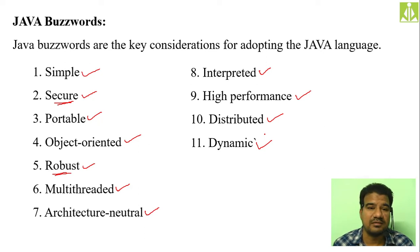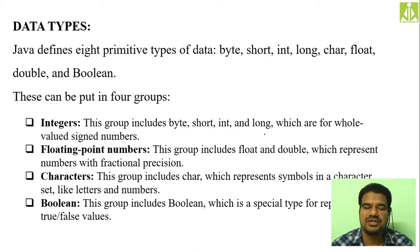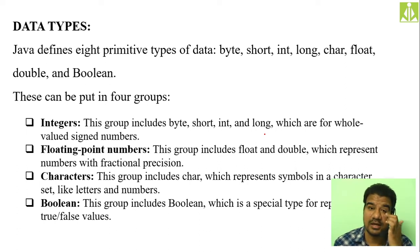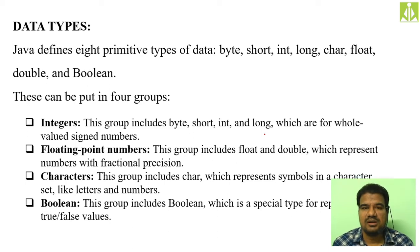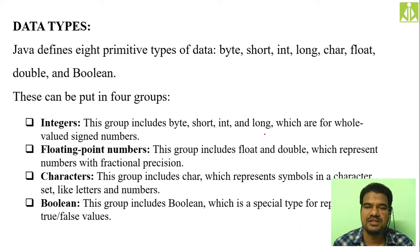Hopefully you understood all these buzzwords — they are important buzzwords and one of the long answer questions. Now quickly we move to the next concept in unit one: data types. We had a handful of discussion about data types in C and C++. A type indicates what type of data we are dealing with and what type of operations we can perform on that data. These data types — there are eight primitive types in Java.